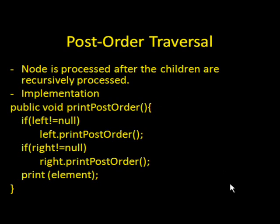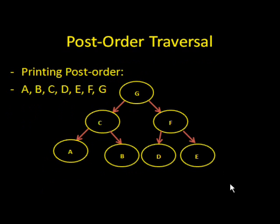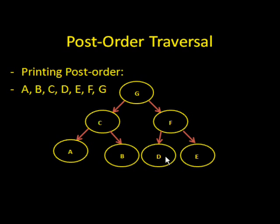Looking at this visually, here I have a tree again. You would look at G first, but you would not output G. You want to output the left child, so you go to C. But before you output C, you output the left child of C, which is A. A has no children, so you output A. Now you output the right child of C, which is B. That's all the children C has, so now you output C. Then you go back to G and output the right children of G: D, then E, then F, and then you output G.